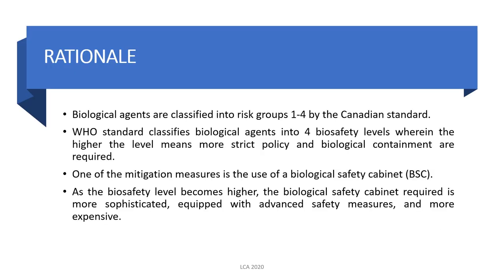According to the Canadian standard, biological agents are classified into four risk groups: agent risk group 1, 2, 3, and 4. But today we are actually following the World Health Organization standard, wherein they classified biological agents into four bio-safety levels — BSL 1, 2, 3, and 4 — wherein the higher the level means the policies are more strict and biological containment is always required. One of the mitigation measures is the use of your biological safety cabinet, classified under engineering controls as seen in the hierarchy of mitigation control measures. As the bio-safety level becomes higher, the biological safety cabinet required is also more sophisticated, equipped with advanced safety measures, and of course more expensive.